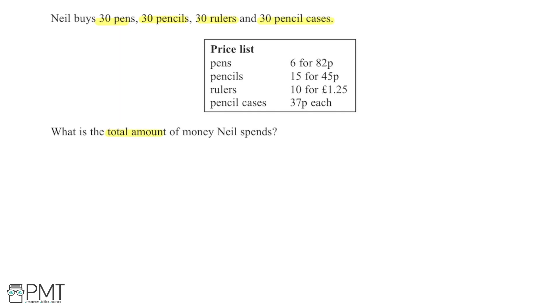So if I start by working from the top of the list, pens, he wants 30 pens. Now if the pens come in lots of 6, how many lots of 6 are we going to need to buy to have 30 pens? So if I take 30 and then divide that by 6, that's going to give me 5 lots of pens.